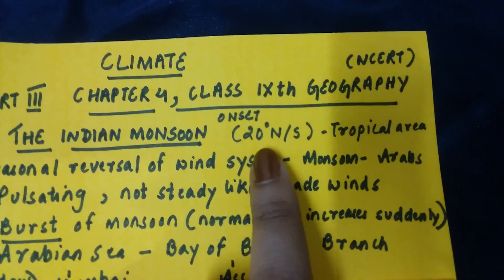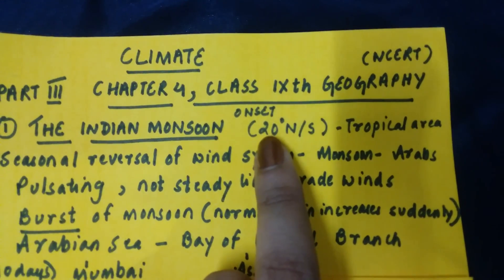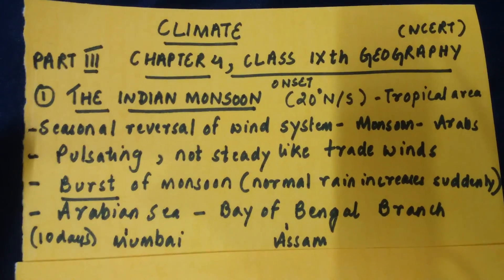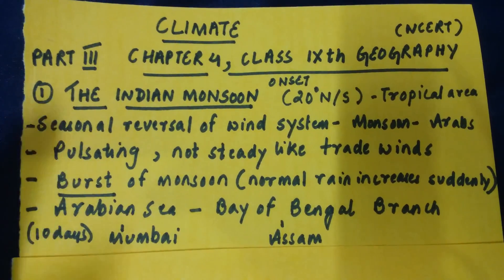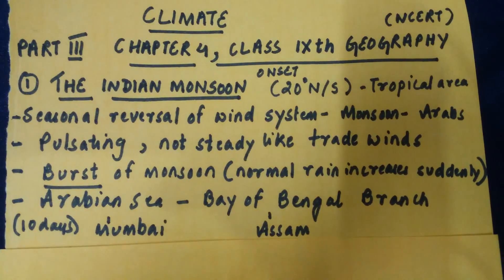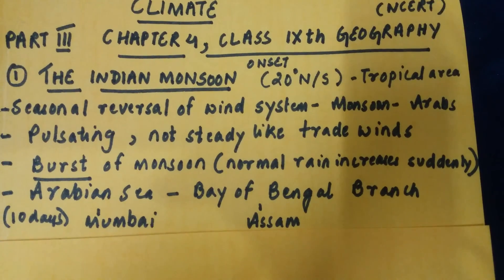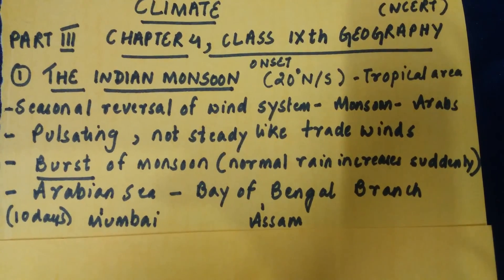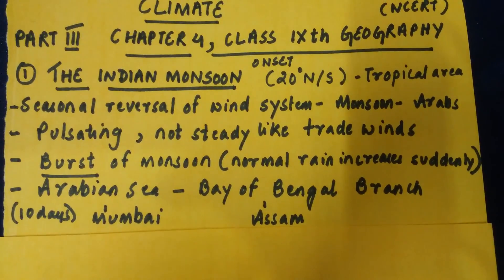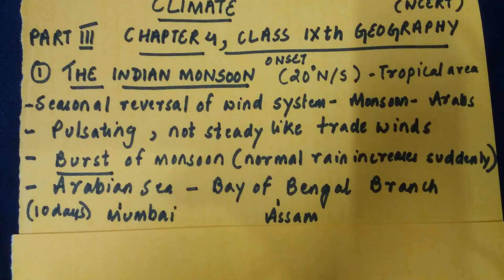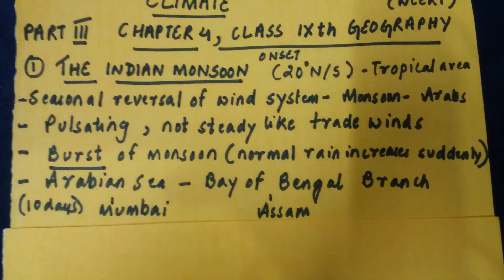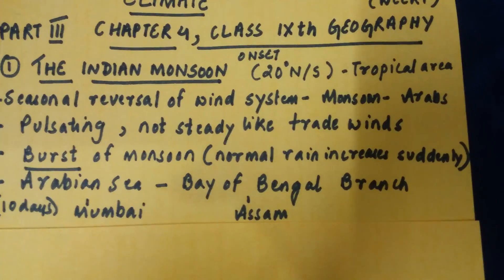Indian monsoon basically occurs from 20 degrees north to 20 degrees south in the tropical area. It is called the seasonal reversal of wind system. As discussed in part 1 or part 2, monsoon derives its origin from the Arab word 'mossam', which sailors gave it because that wind system which suddenly reversed helped them in their journey. So this seasonal reversal of wind system is nothing but the monsoon.